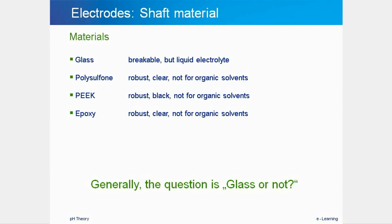The shaft material of the electrodes is another important property. The different options available are glass, polysulfone, PEEK, and epoxy. The main choice is glass or plastic — if plastic is chosen, different kinds can be selected to suit the application. All plastic shafts are not suitable for organic solvents, so for measuring these, a glass electrode is obligatory. Glass electrodes always have liquid electrolytes, while plastic ones can have a variety of electrolytes.